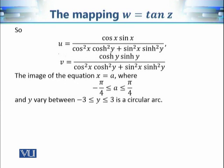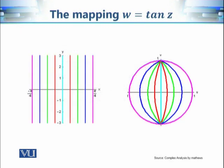We want to calculate the images of the equation x = a, where a varies from −π/4 to π/4 and y varies from −3 to 3. I'm leaving this as an exercise; if you have trouble, you can follow the steps used for sine(z). A similar — though not identical — calculation shows that the images of these line segments are circular arcs in the w-plane.